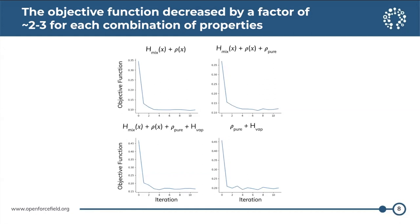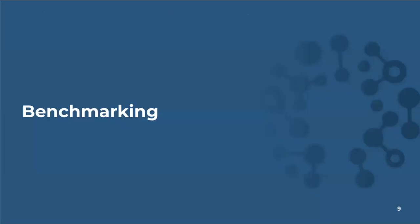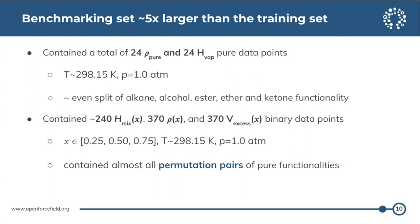The question then is how well these results generalize to broader test sets of molecules. To test generalization, we built a significantly larger benchmarking set than the training set, containing about 1,000 total data points. It contained pure liquid densities and pure enthalpies of vaporization for all the different functionalities we trained against, a significant amount of mixture data points including enthalpies of mixing and binary mass densities, and we also included binary excess molar volumes to ensure we're getting the difference between pure and binary densities correct. For each mixture, we looked at three different compositions at ambient conditions.